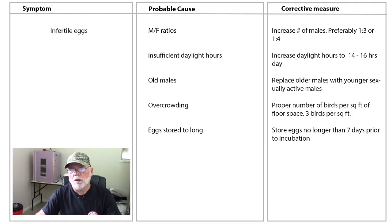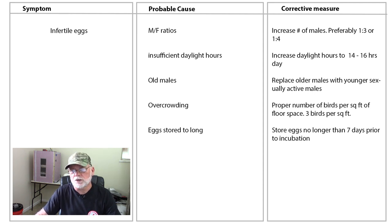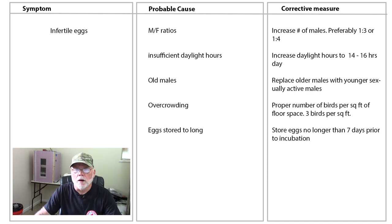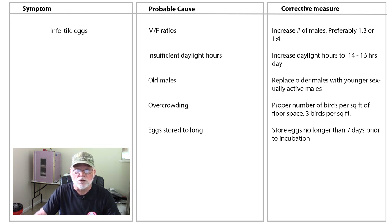Okay, back to our symptom sheet. Probably the biggest cause of infertile eggs is due to a poor male to female ratio. You want to make sure that you've got enough males in with your hens so that all the hens are being bred. If you don't have enough males, or if dominant males are preventing others from breeding, keep your ratios down — preferably one male to every four hens, or even a one to three ratio. The next one on the list is insufficient daylight hours. Caternix quail need between 14 and 16 hours of daylight a day to be sexually active.